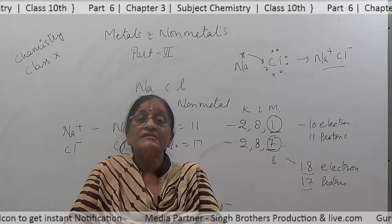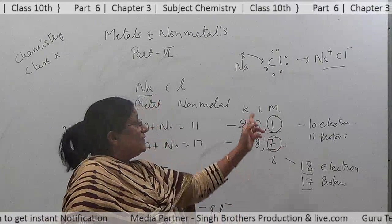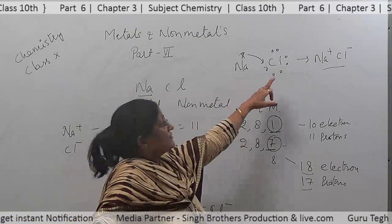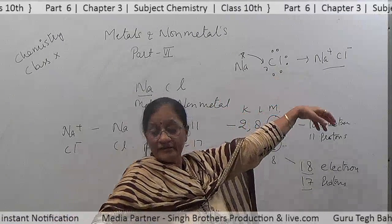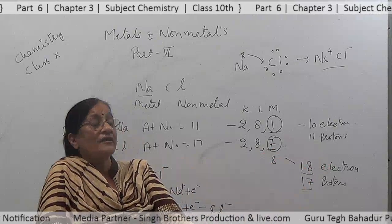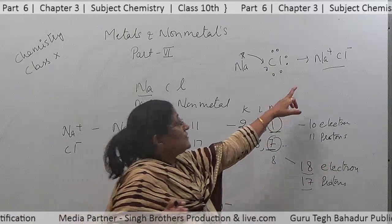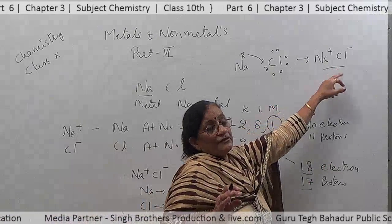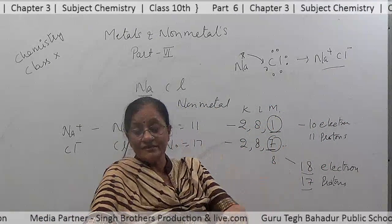In this, the positively charged ion is called a cation and the negatively charged ion (Cl⁻) is called an anion.